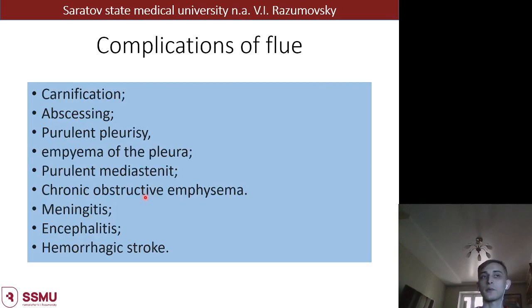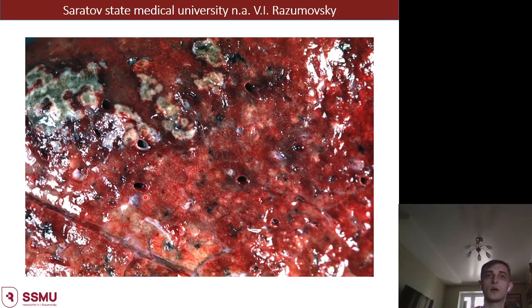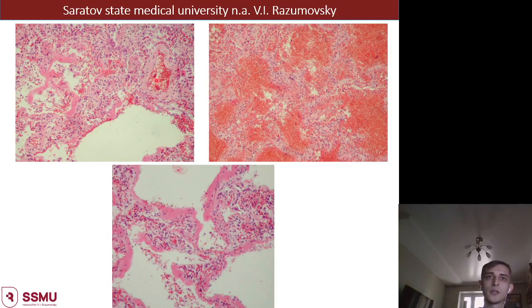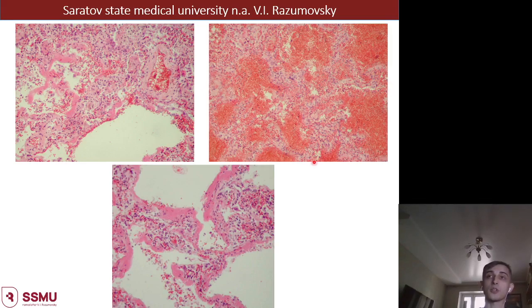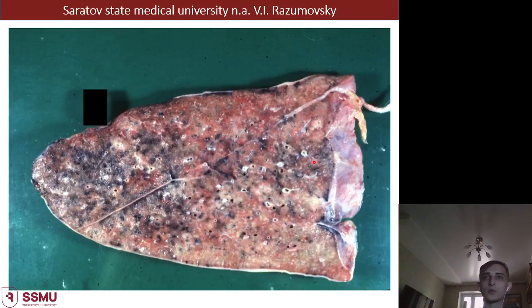Complications of influenza include carnification, abscess formation, purulent pleuritis, empyema of pleura, purulent mediastinitis, chronic obstructive emphysema, meningitis, encephalitis, and hemorrhagic stroke. On this slide we may see lung in influenza with hemorrhagic areas. Histologically we can see accumulation of erythrocytes in the lung tissue, which is the typical characteristic of influenza infection - serous hemorrhagic type of inflammation.